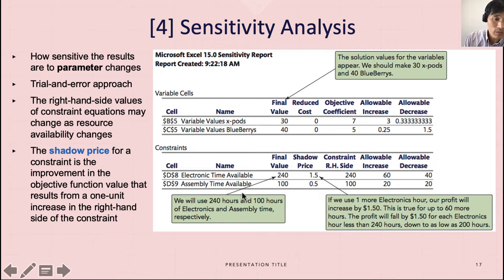Similarly, assembly time available says the final value optimal value is 100. However, shadow price says there's a $0.50 shadow price, meaning that when you increase one unit of assembly time available from 100 to 101, the shadow price or the profit will increase by $0.50. And you can increase it by 20 more of assembly time, so from 100 to 120. Similarly, allowable decrease is 20, so up to 80.